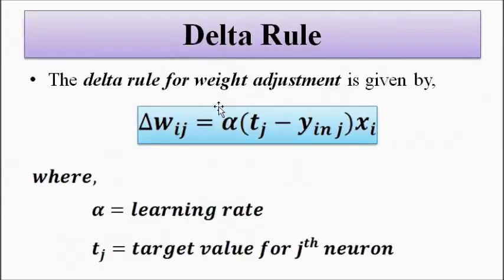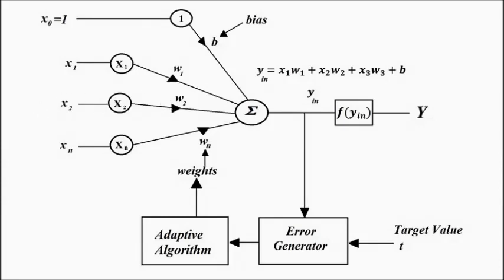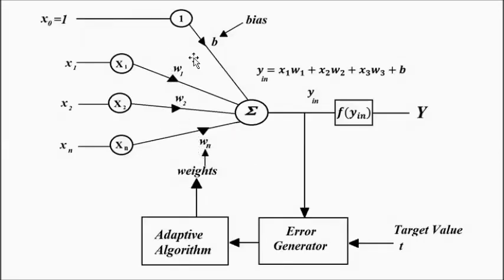This is the delta rule we have already studied in the five basic learning rules. Weight adjustment takes place as: the learning rate constant multiplied by the difference between the target value and the net input, multiplied by the input signal to that specific neuron. We pick one neuron from the whole setup along with its synaptic weight connection to the output, and on that basis all weight adjustments happen in that particular way.